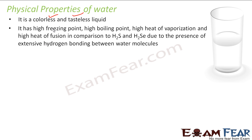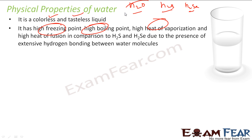Water has a high freezing point, high boiling point, and high heat of vaporization. When you compare H2O with H2S or H2Se, why? Because in this case we have hydrogen bonding. Because oxygen is electronegative, we get a partially negative charge, and we get positive charge on hydrogen, and so hydrogen bonding is developed.